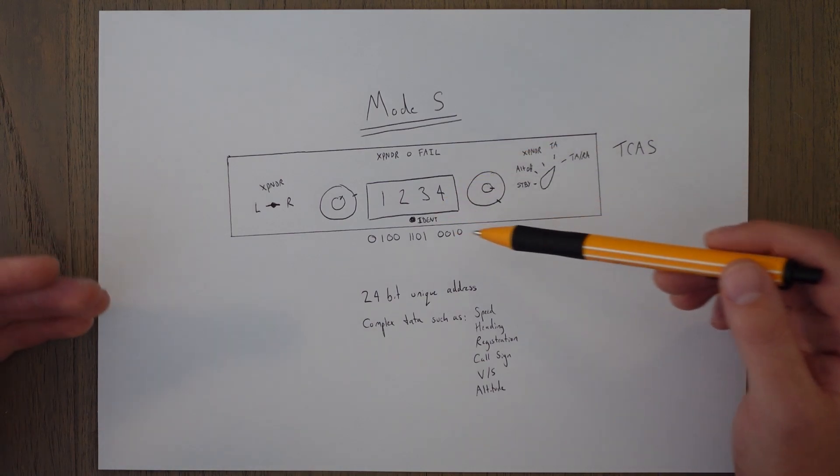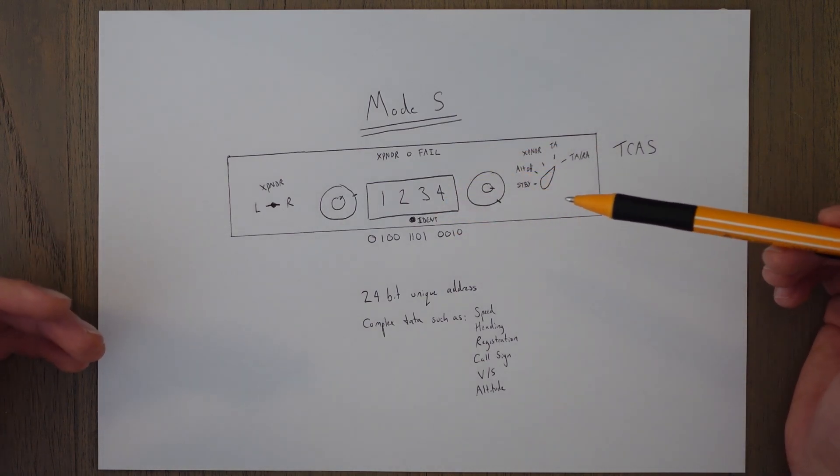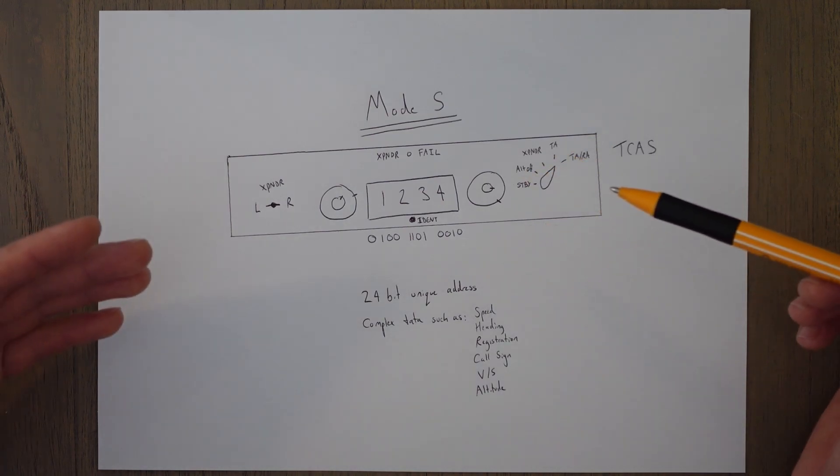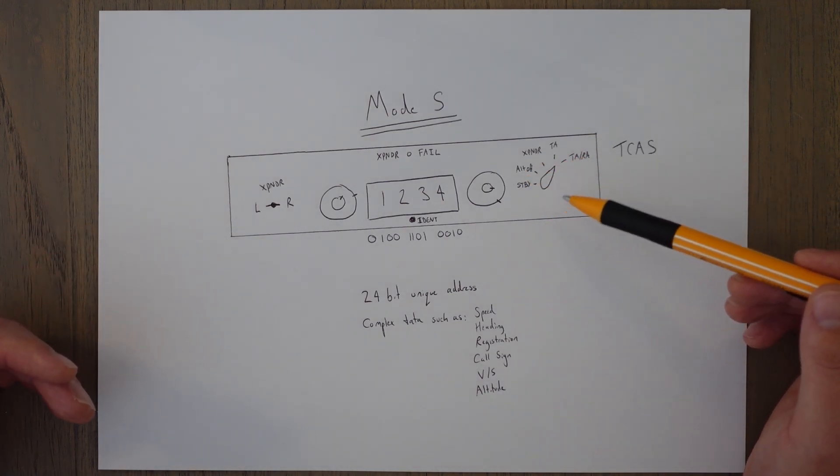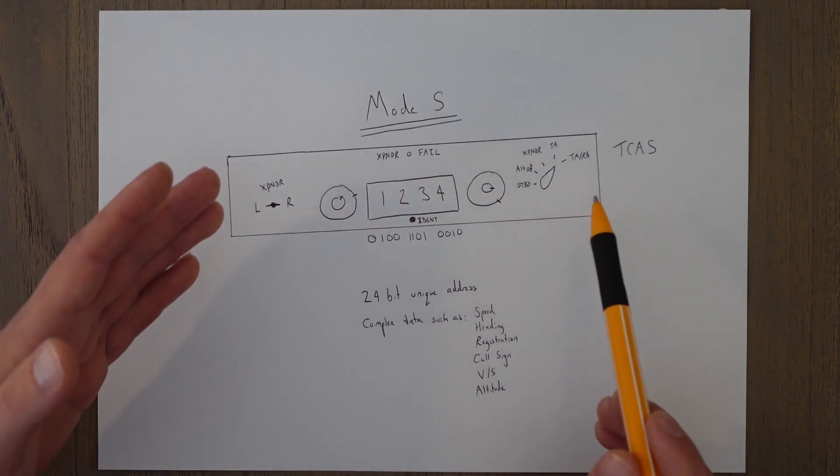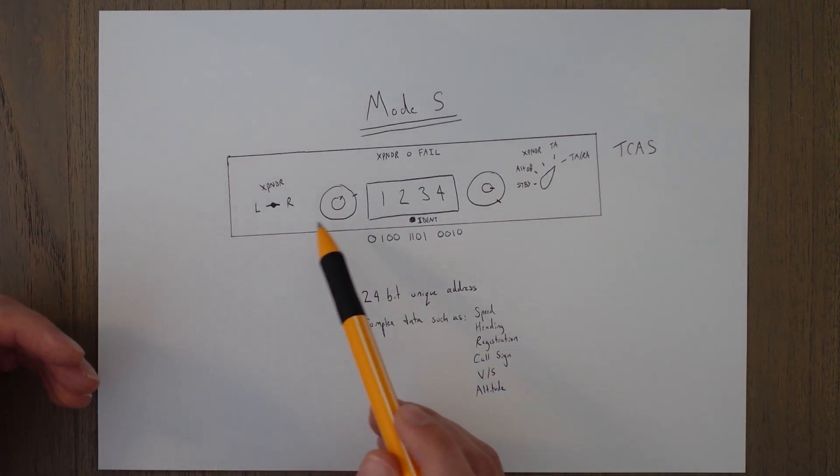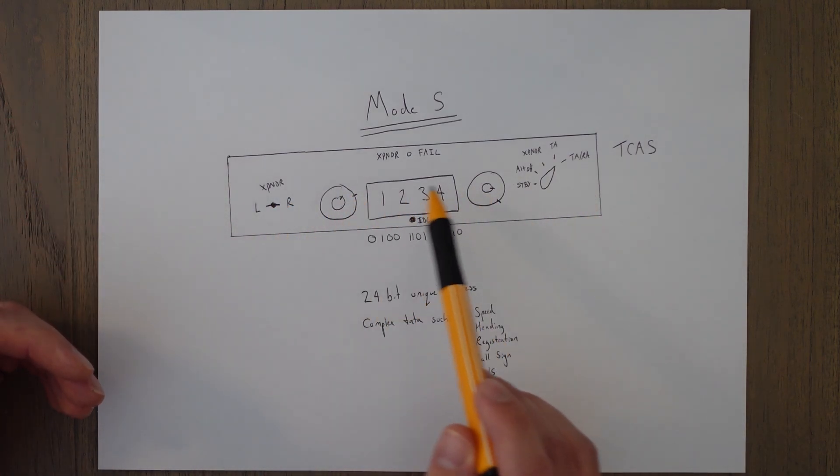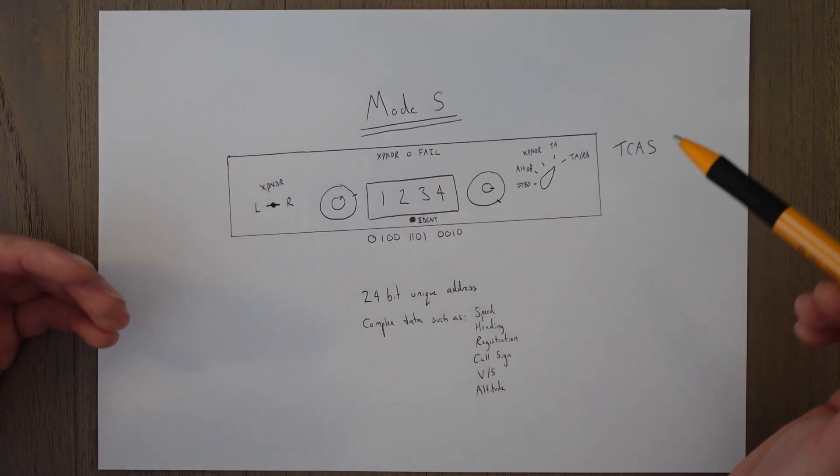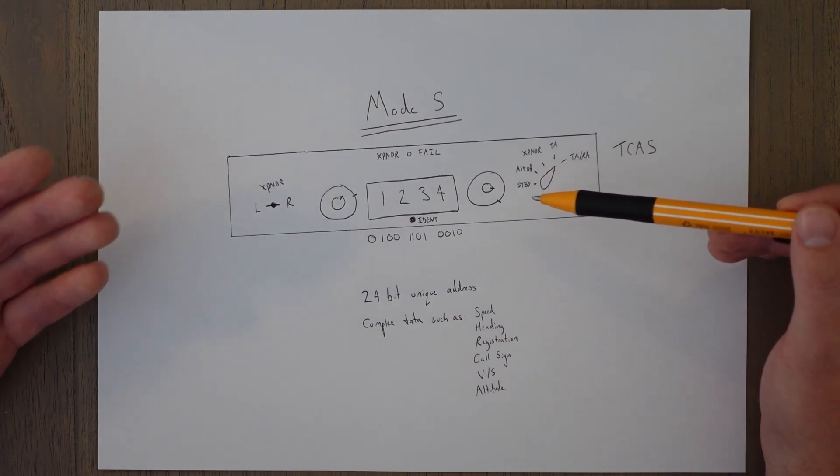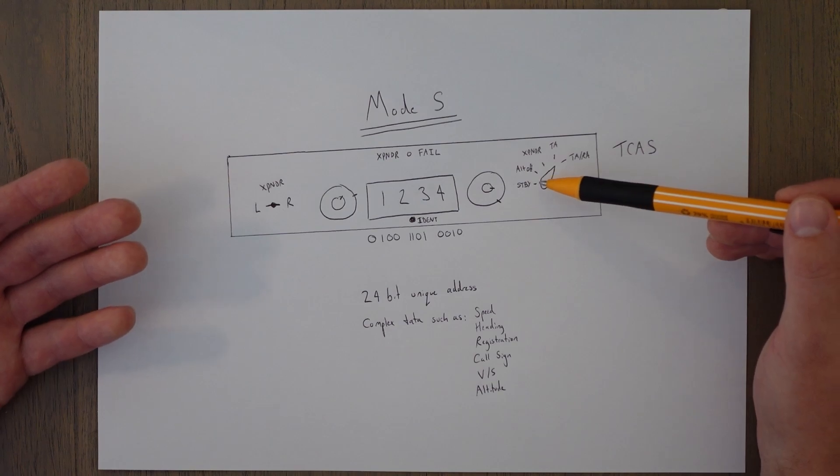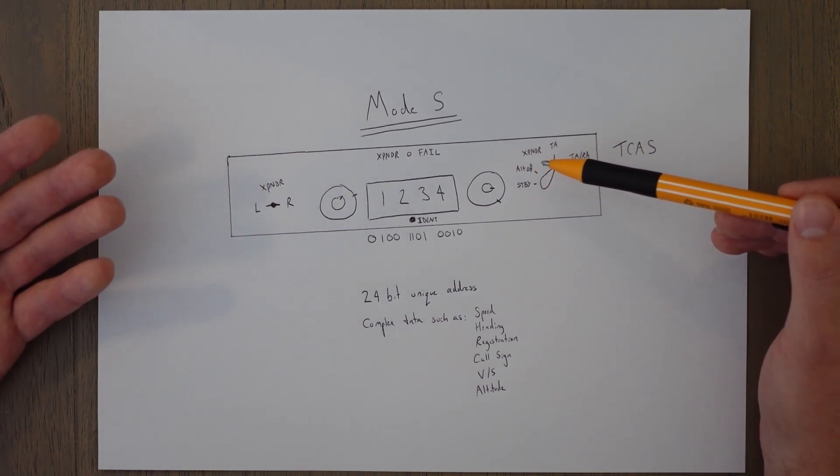So this is roughly what a transponder panel on a modern jet aircraft looks like, and while there isn't a clear Mode A, C, and S selection, the options will be available via selecting the relevant button on this sort of dial down here. So you probably have two physical transponder systems running through one panel. You just select the left one or the right one. You've got the system for selecting the code, a little failure light if the system fails, the ident button to give that ping, and then over here you've got standby which is off. You've got ALT-OFF which should be your Mode A, there's no altitude information coming out. You've got XPNDR transponder which is just a standard Mode C transponder.